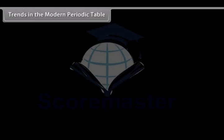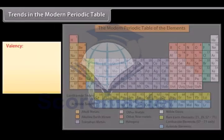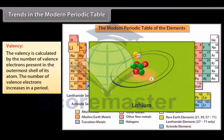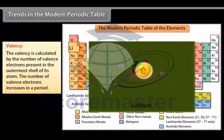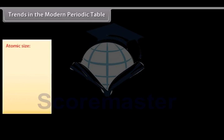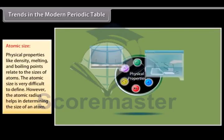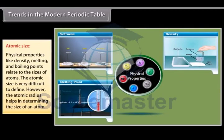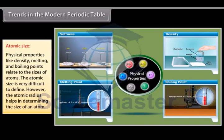Trends in the Modern Periodic Table. Valency. The valency is calculated by the number of valence electrons present in the outermost shell of its atom. The number of valence electrons increases in a period. Atomic Size. Physical properties like density, melting and boiling points relate to the sizes of atoms.